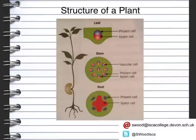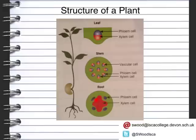Looking at the relative sizes of the two transport systems: in the leaf, the xylem and phloem cells are roughly a similar size. Moving from the leaf to the stem, they remain a similar size but there are more of them. In the roots, the xylem cell is massively bigger compared to the phloem, because this is where water enters the plant — the xylem needs to be larger to accommodate more water coming through the roots. At the leaf, the phloem handles removal of sugars produced by photosynthesis.